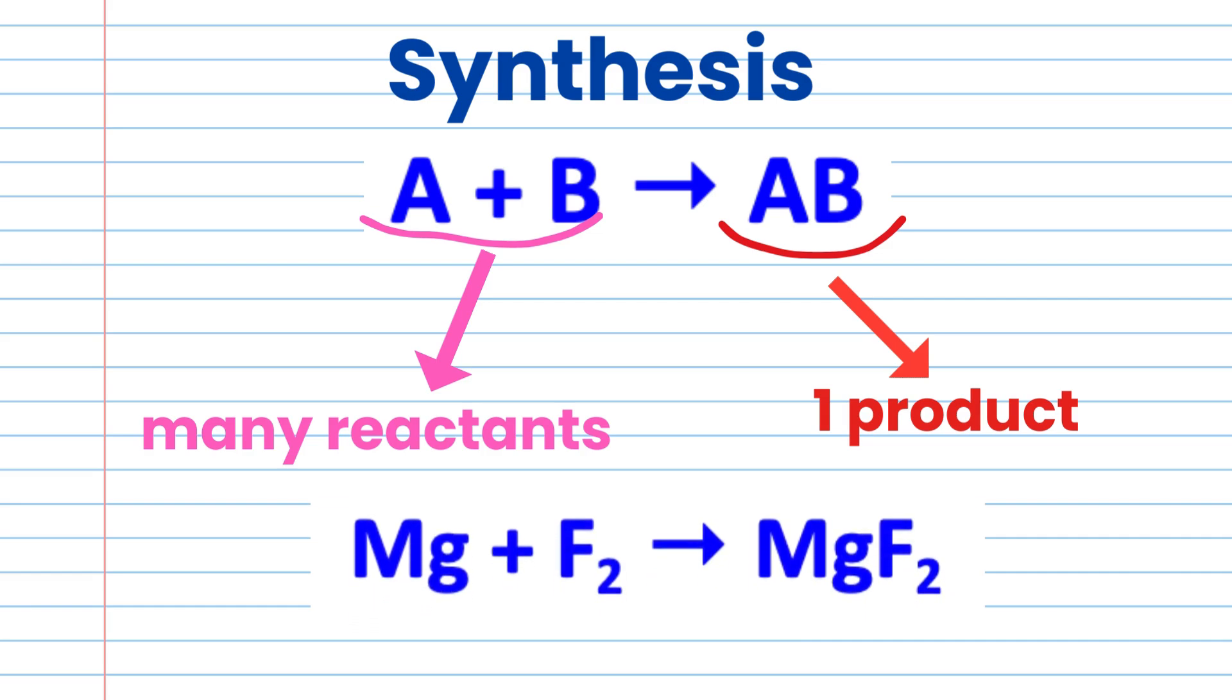Magnesium and fluorine react to make one product, magnesium fluoride, and we write it as Mg plus F2 gives MgF2.